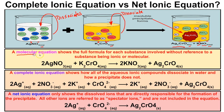From this we can create what is called a molecular equation. A molecular equation shows the full formula for each substance involved without reference to a substance being ionic or molecular. So silver nitrate aqueous reacting with potassium chromate (K₂CrO₄) aqueous produces potassium nitrate aqueous and silver chromate solid — the precipitate. Balanced, we get two moles of silver nitrate reacting with one mole of potassium chromate to produce two moles of potassium nitrate and one mole of silver chromate.